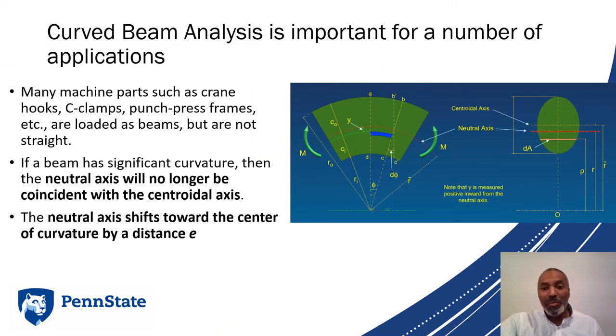Curve beam analysis is important for a number of applications, such as those hooks on the end of large cranes, C-clamps which you may have used in the learning factory, punch press frames, etc. Anything that's loaded as a beam, meaning there's a transverse load, but the thing is not straight, it has some radius of curvature.